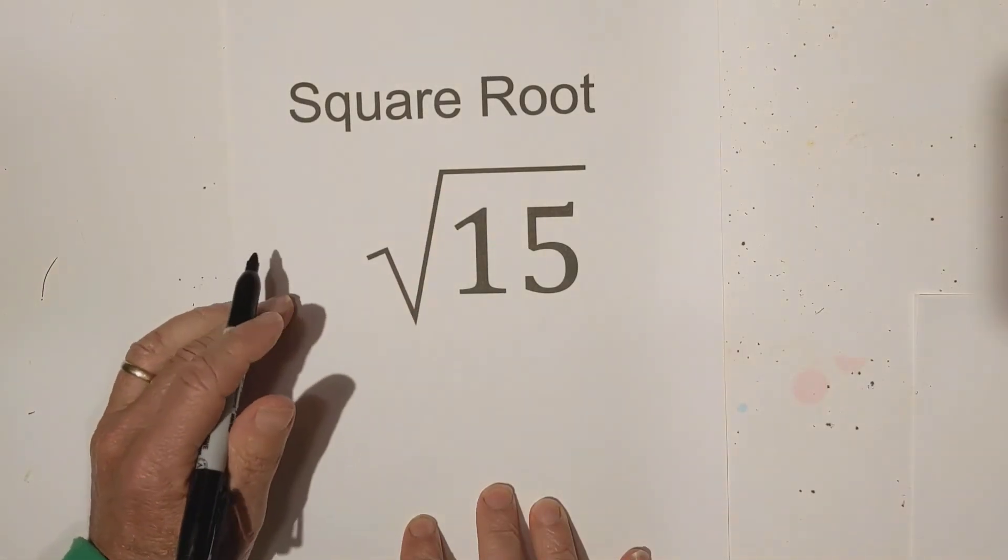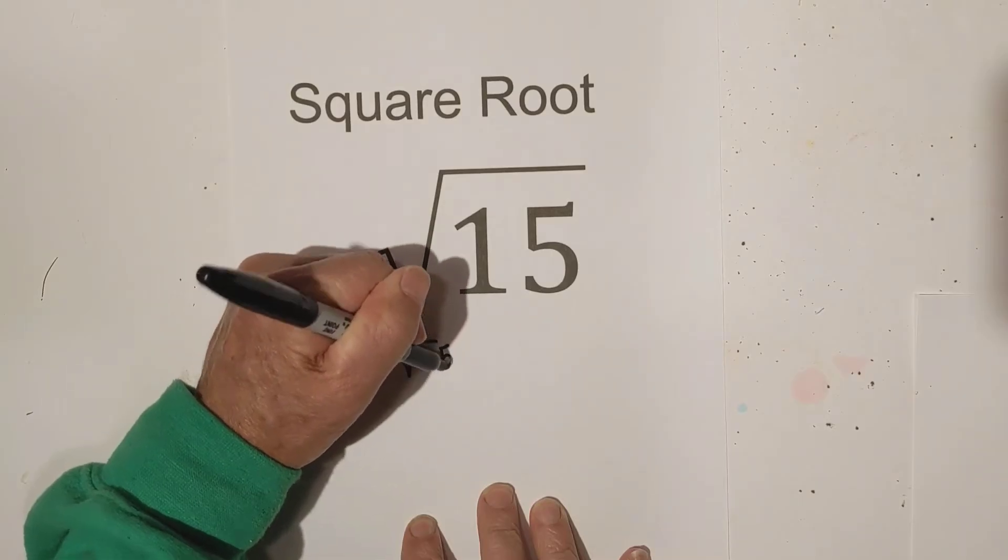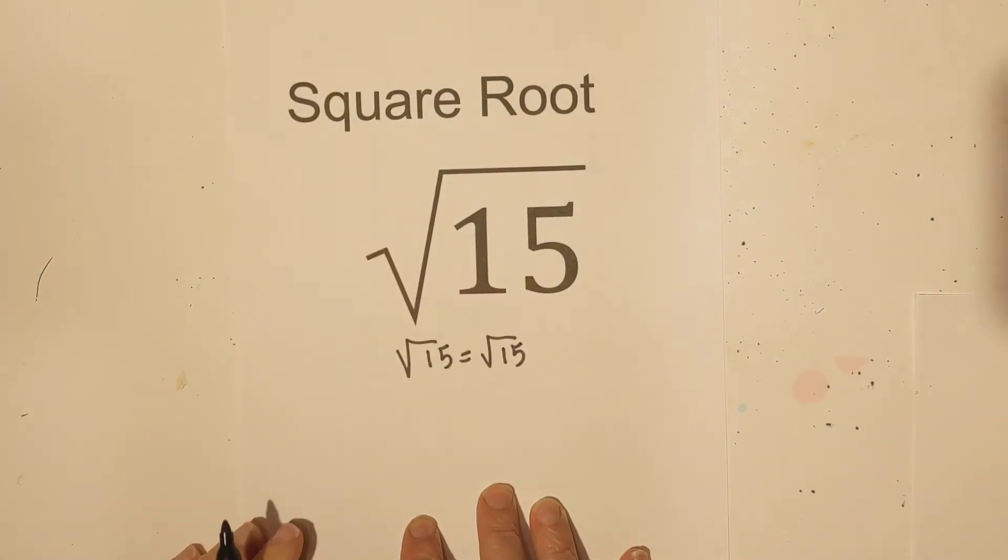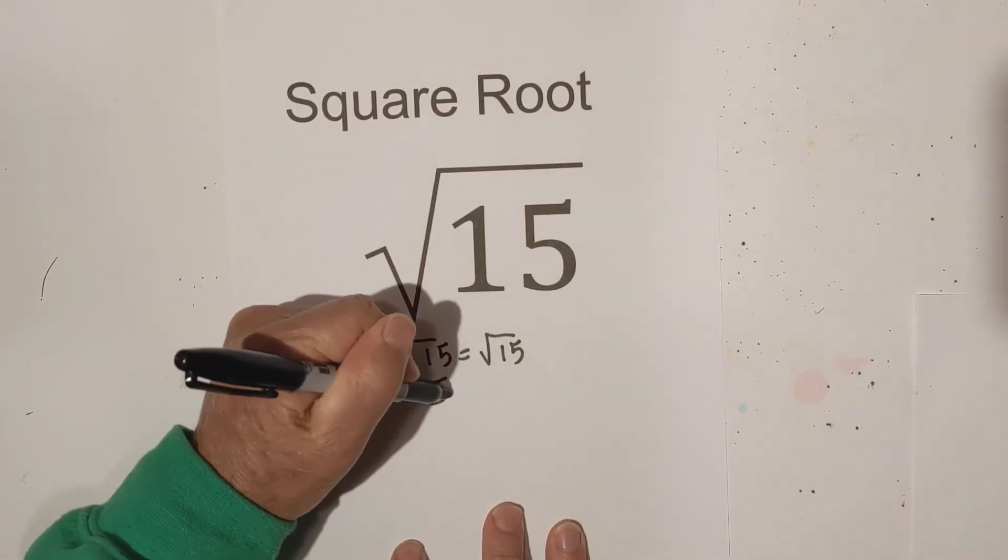First, 15 is not a perfect square, so if you were to simplify 15, simplified would be 15. That means that it is an irrational number.